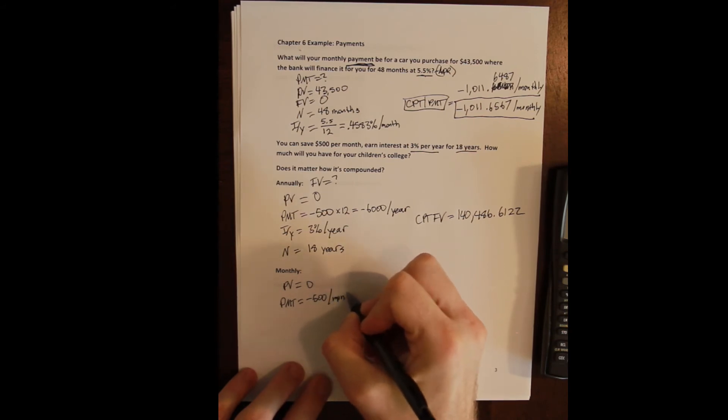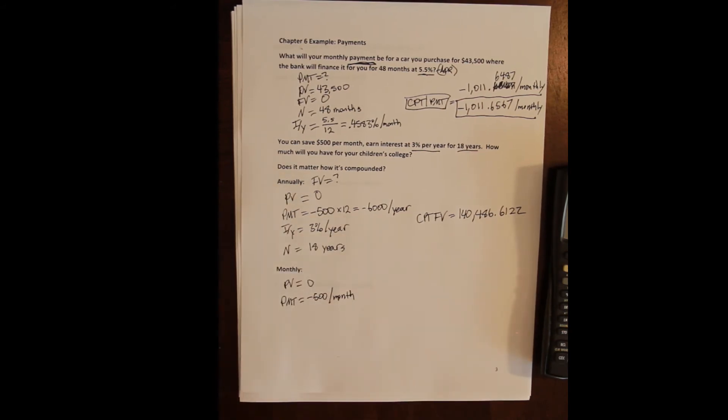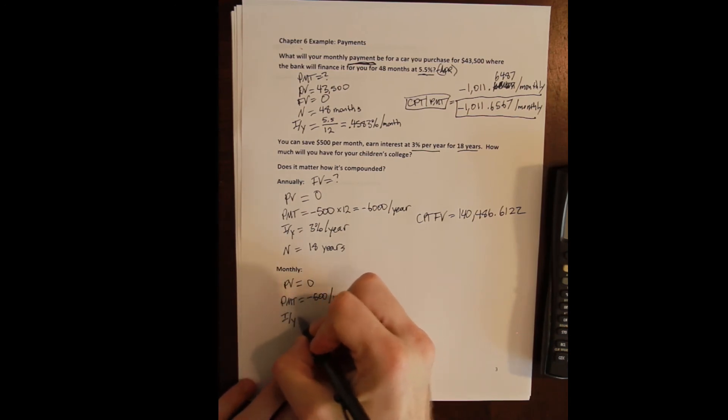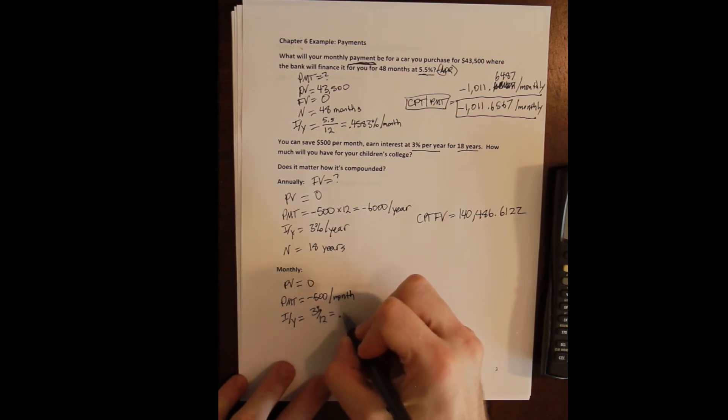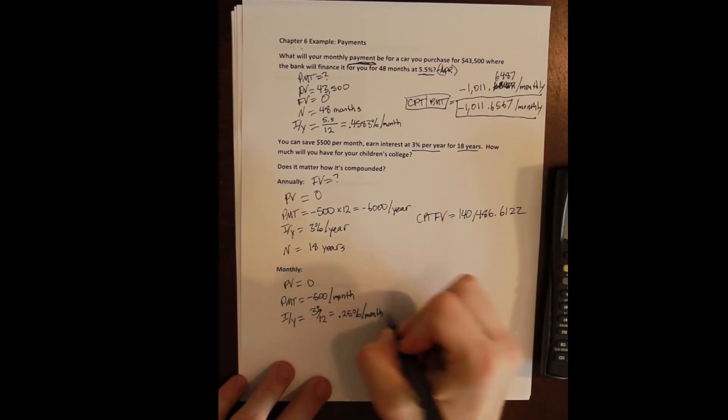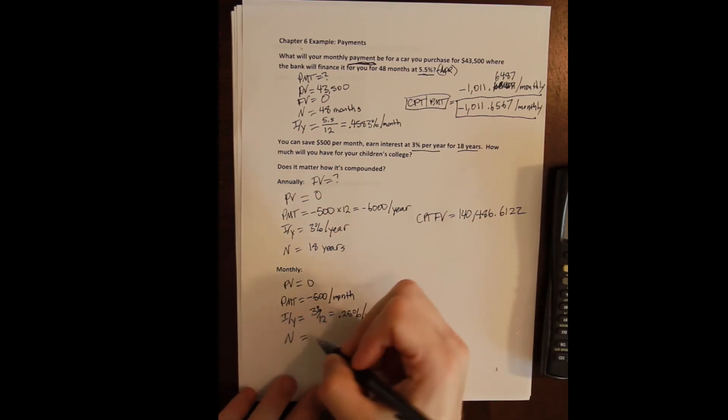So every month we'll get a little more interest to earn. Our inputs are similar. Our present value is still zero. Our payment is now a monthly payment, so we're gonna leave it at a five hundred dollar cash outflow per month—so negative five hundred. Instead we need to convert our interest rate. Instead of earning three percent per year, we need a monthly rate, so three percent divided by twelve months gives me point two five percent per month.